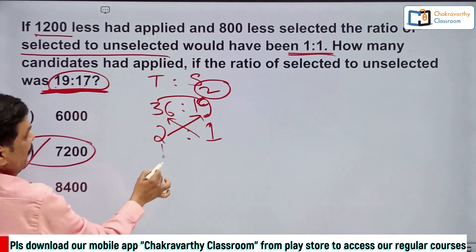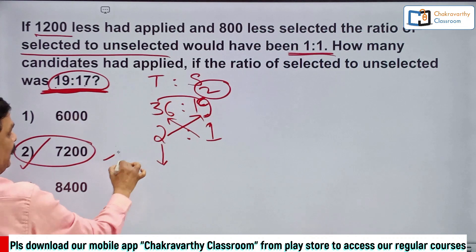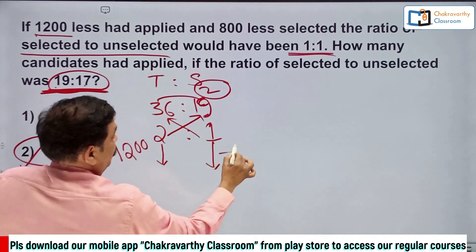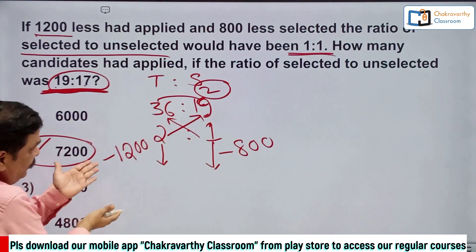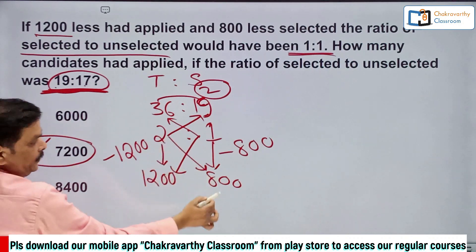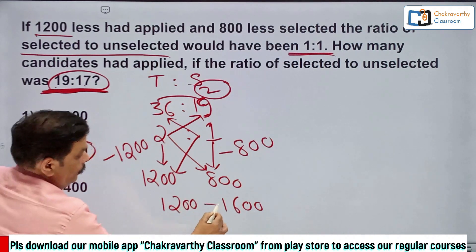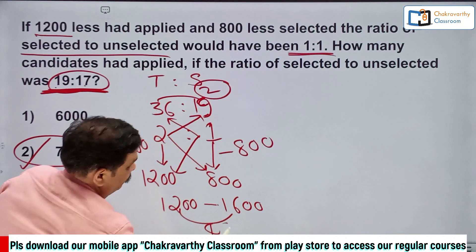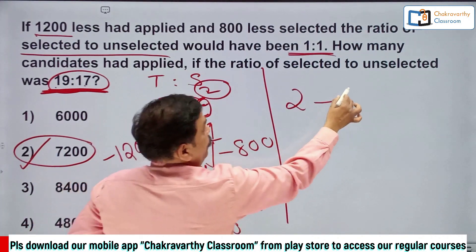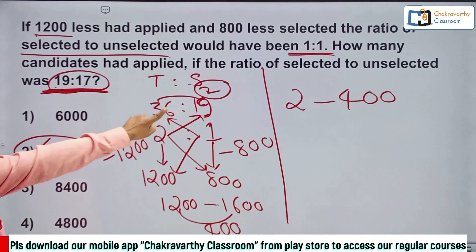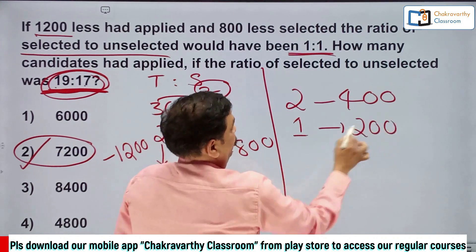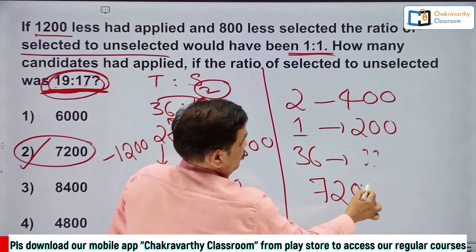Now for the manipulation: 1200 less had applied — that's minus 1200 on total — and 800 less were selected — that's minus 800 on selected. Both are minus. Cross multiply: 2×1200 = 2400... actually 1×1200 = 1200 and 2×800 = 1600. The difference is 1600−1200 = 400. Equalize: 2 parts = 400, so 1 part = 200. Total is 36 parts, so 36×200 = 7200. My answer is 7200.